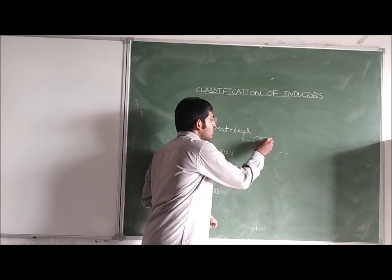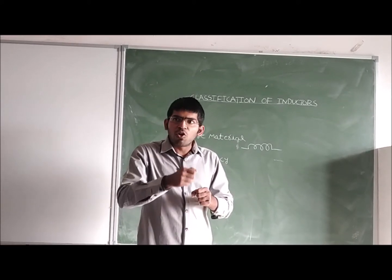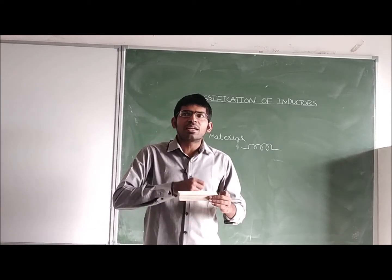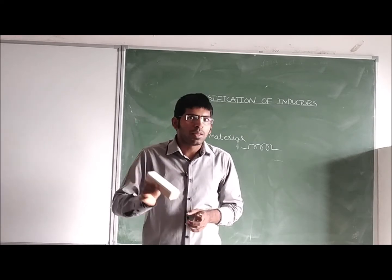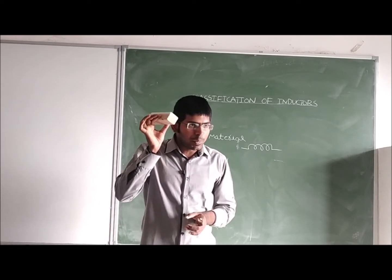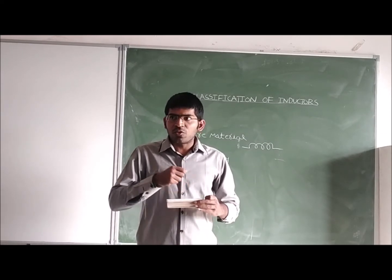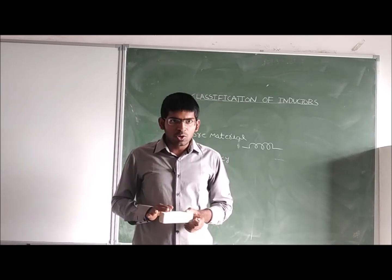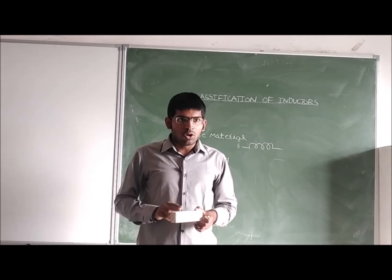If we take an iron material and fold a wire on that iron material, that inductor is called an iron core inductor. If we use ferrite material as the core and fold a conductor wire on that ferrite core, it is called a ferrite core inductor. So according to the core material used, inductors are classified into three types: air core, iron core, and ferrite core.